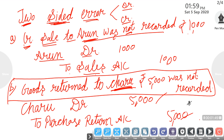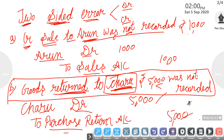Similarly, let us take another example: goods returned to Charu was not recorded. Charu is a supplier. We returned goods to the supplier, which means we had purchased goods from Charu at some point. When you return goods, the entry will be purchase return. Since purchase balance is debit, purchase return will be credit. So the entry becomes: Charu debit, to Purchase Return account, Rs. 1000 — and our entry is recorded.